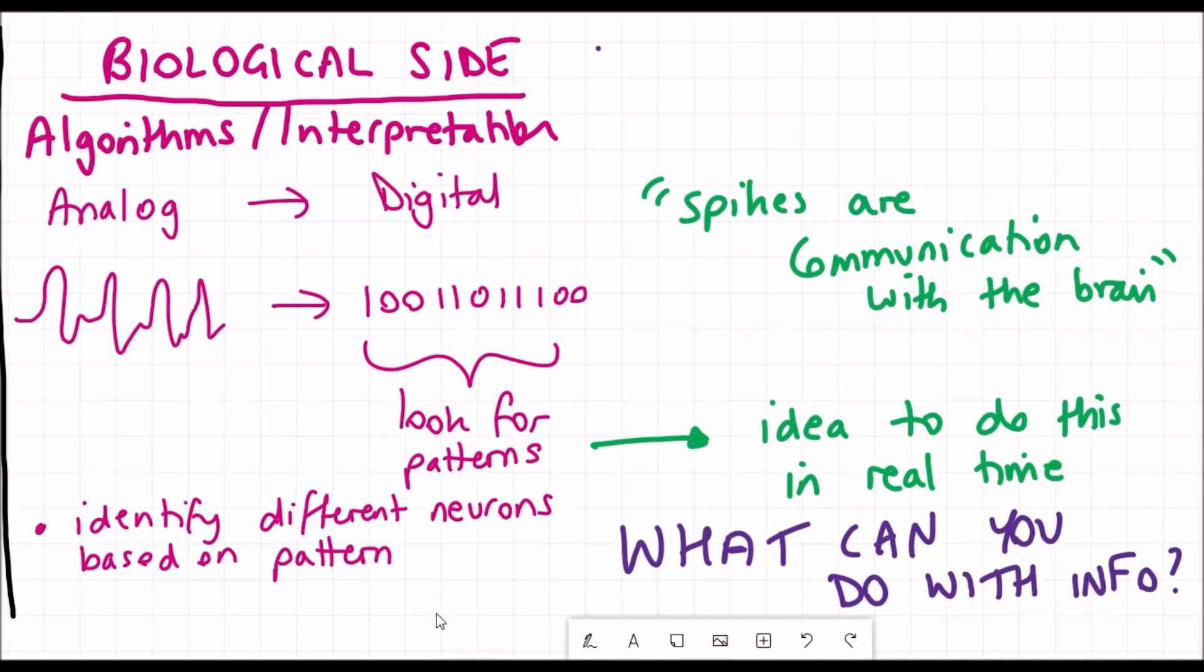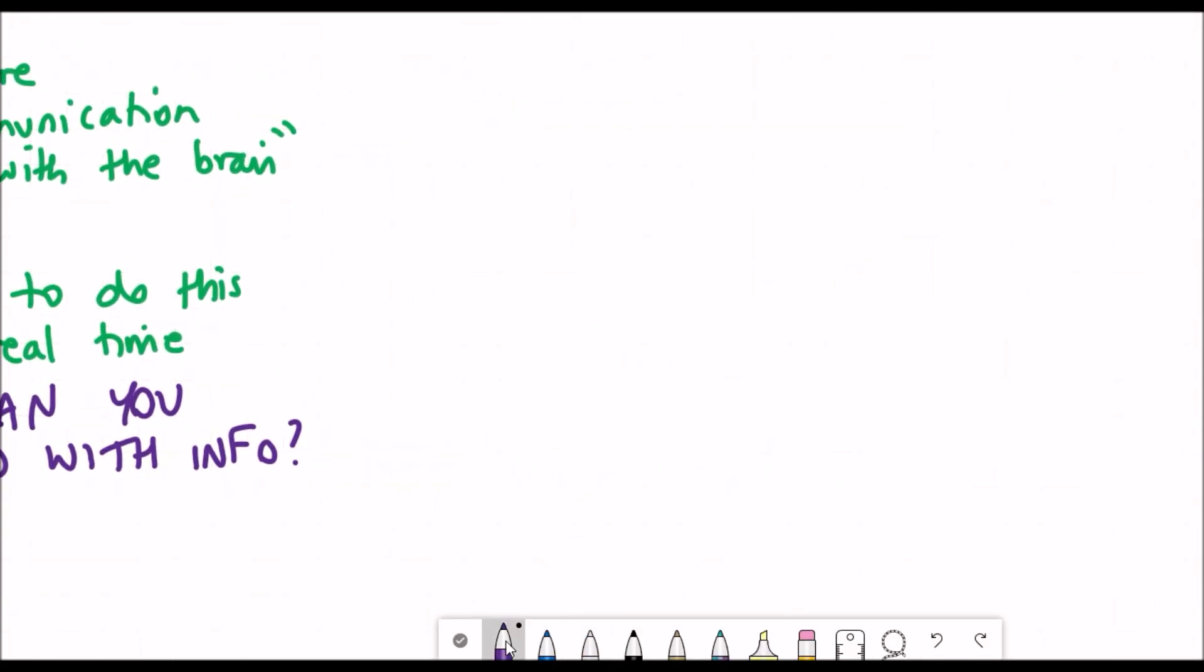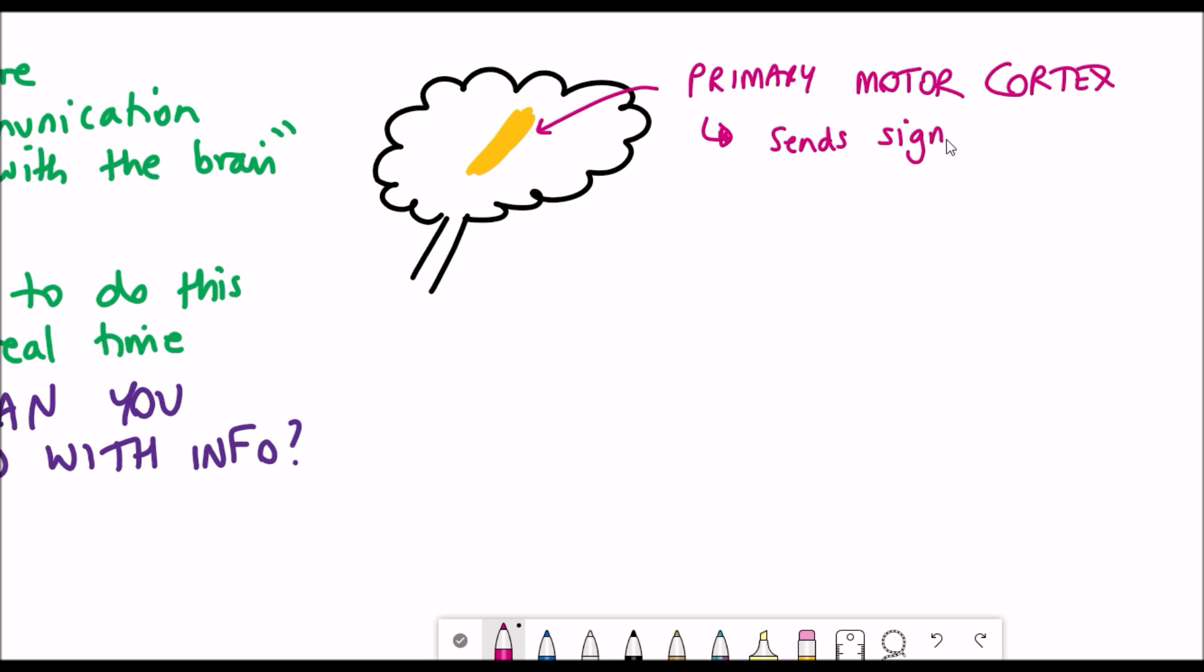But putting the challenges to one side, with this information what could you actually do? One example that I'll explain is the treatment of paralysis. There's a region in the brain known as the primary motor cortex and this is where signals are sent down the spinal cord to muscles to drive movement. The problem is this becomes defective in patients with paralysis.